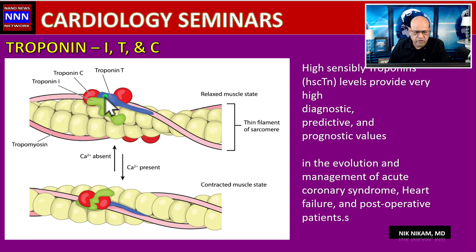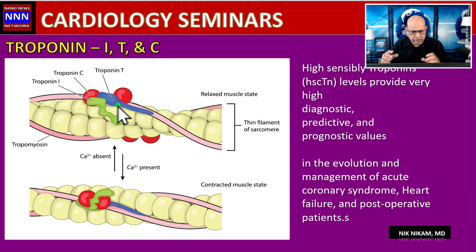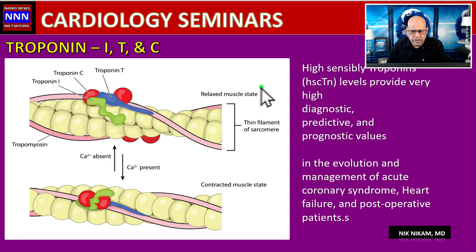Troponin T is specific to the myocardium, and elevated troponin T levels may signify some degree of myocardial injury — it could be physical, inflammatory, or related to ischemia or necrosis. These troponins take part during the contraction and relaxation phases of the cardiac cycle.